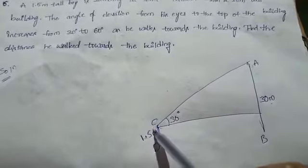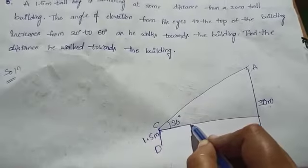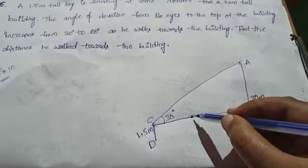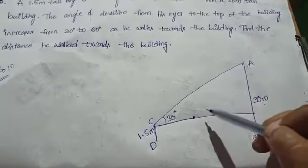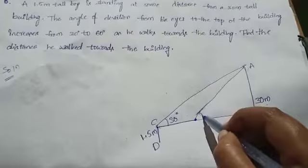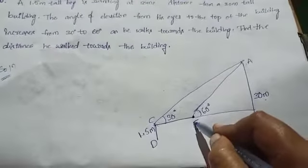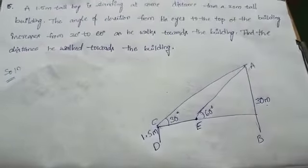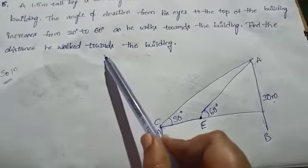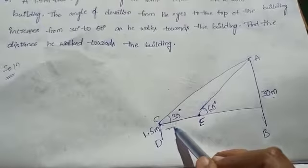He walks towards the building. As he walks toward the building, he makes an angle with the top of the building of 60 degrees. This new position point is labeled A. We have to find the distance covered by him — this distance.